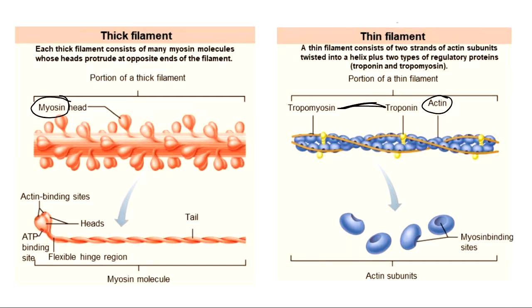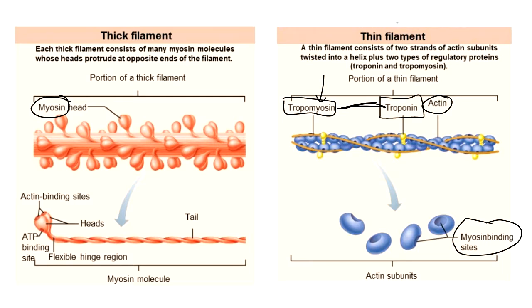The way I like to describe these two proteins: tropomyosin is like a wet spaghetti noodle. Its job is to cover up the myosin binding sites on actin. If I didn't have tropomyosin, myosin could always attach to actin. Troponin is like a pushpin — it holds tropomyosin in place. Since tropomyosin is a wet spaghetti noodle that sags in the middle, I need troponin as a pushpin to keep it straight.